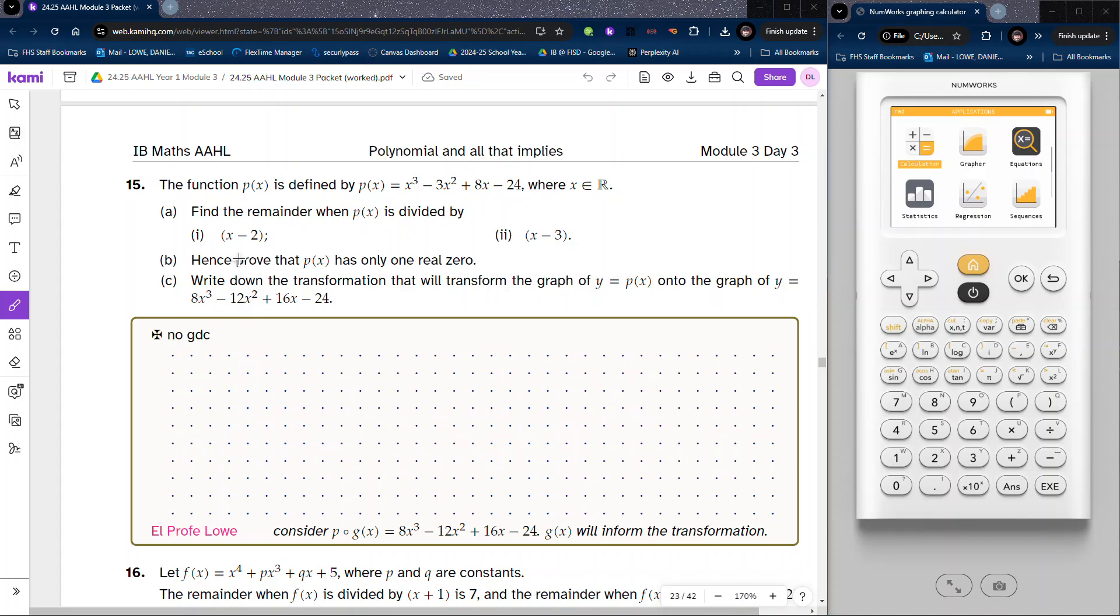So let's say that we have a function defined by this where x is a real number. We want to find the remainder when this polynomial P of x is divided by x minus 2 and find the remainder when it's divided by x minus 3.